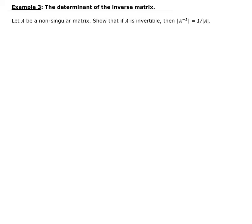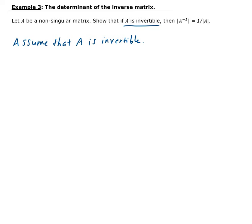So again, this is an if-then statement, so we need to go ahead and assume this part. We're going to assume that A is invertible. From here, what we can do is use some of the properties that were stated before.